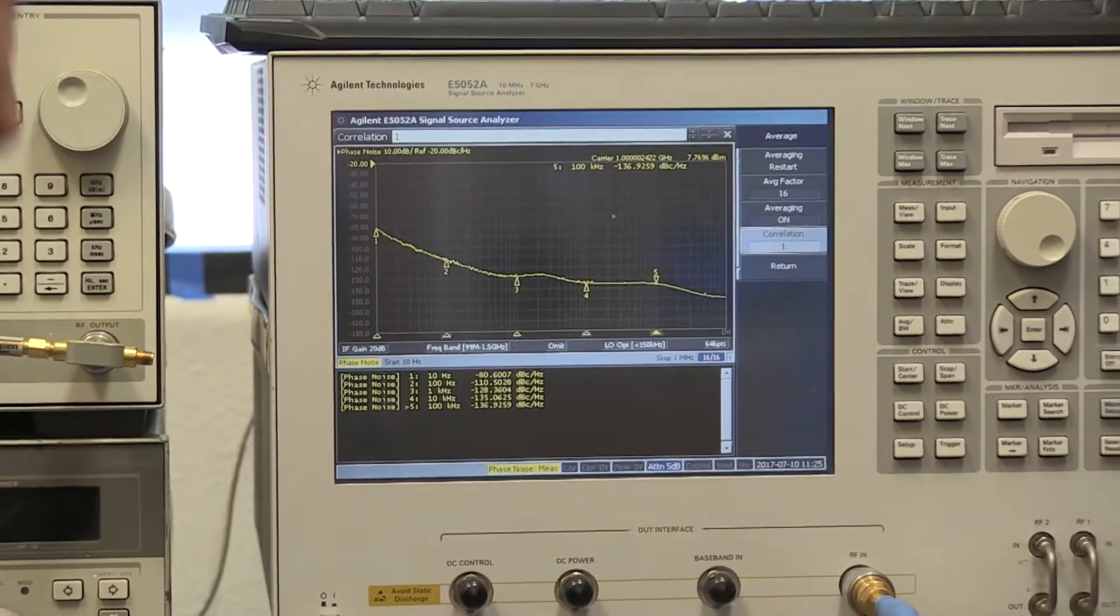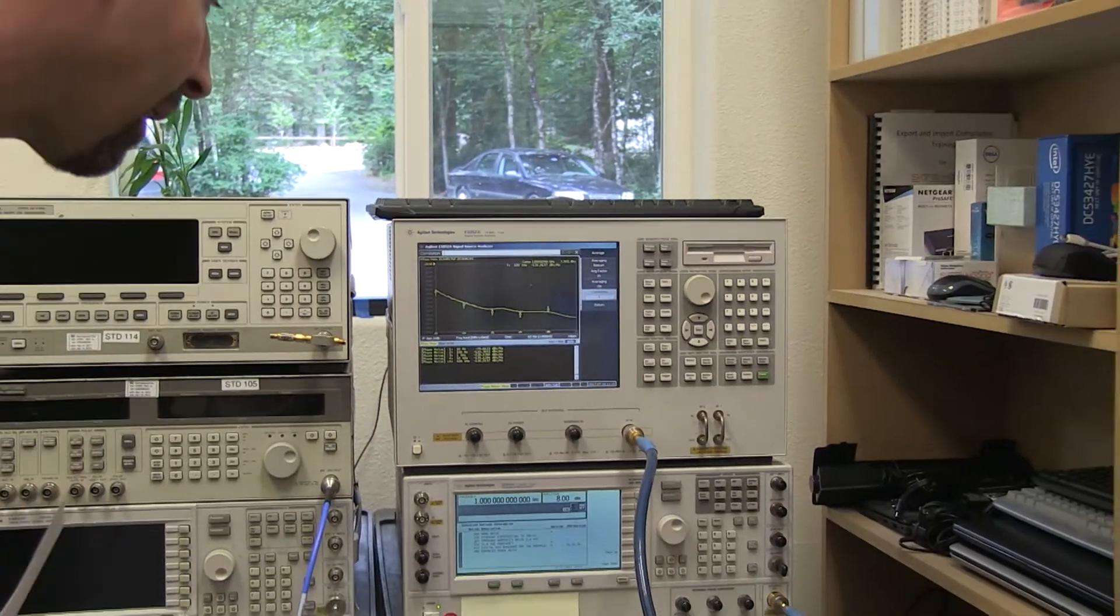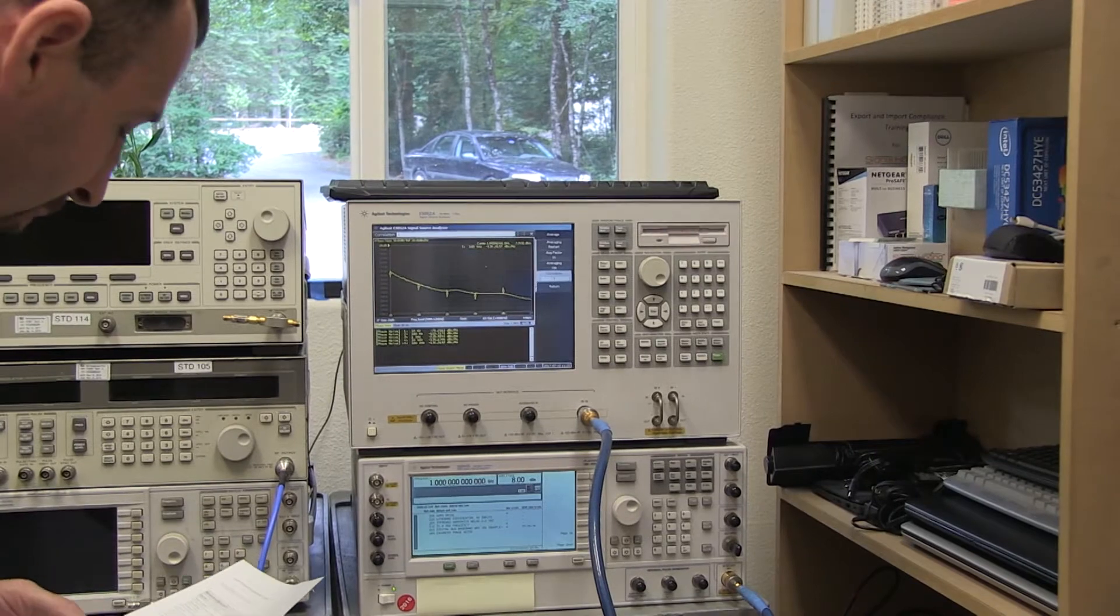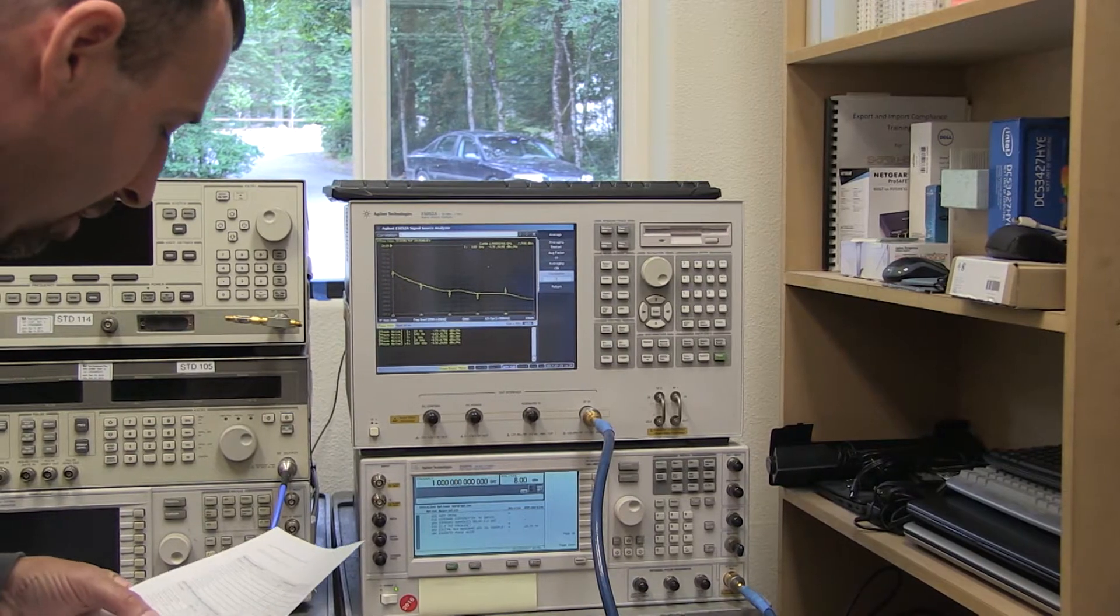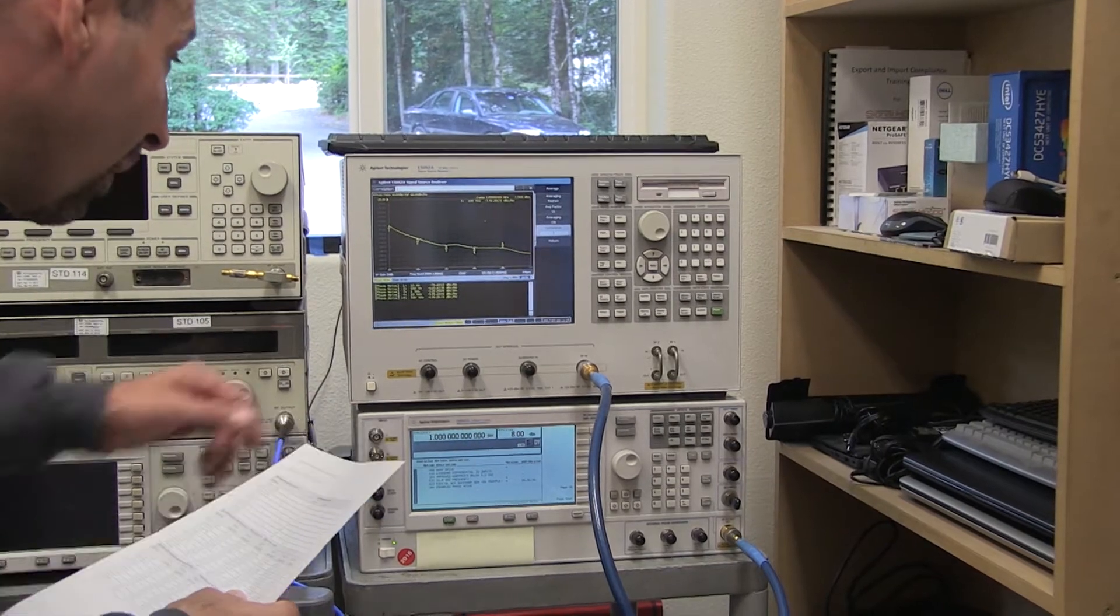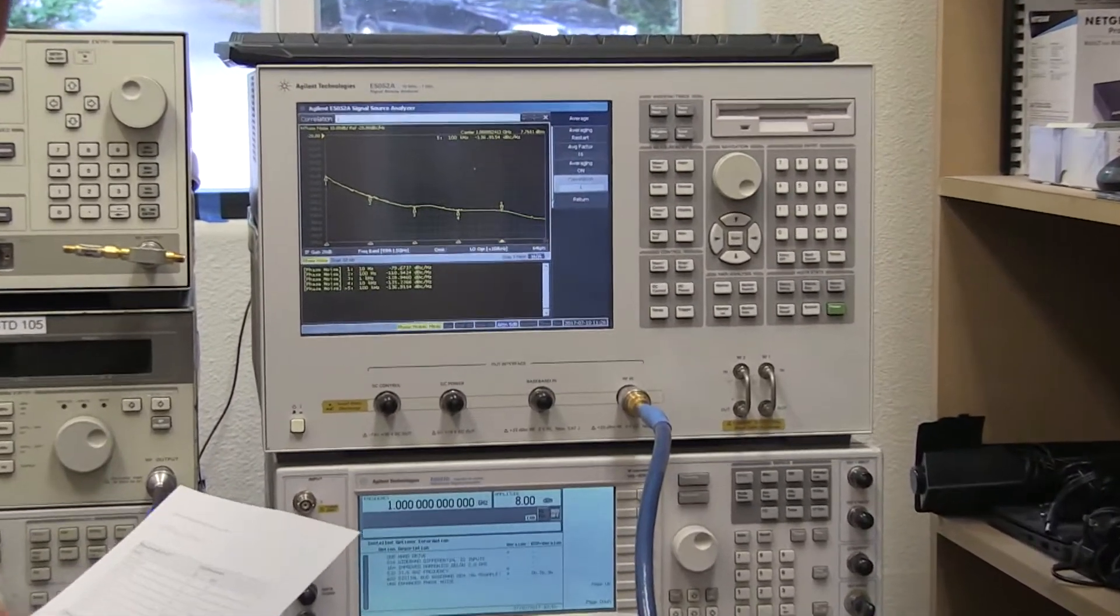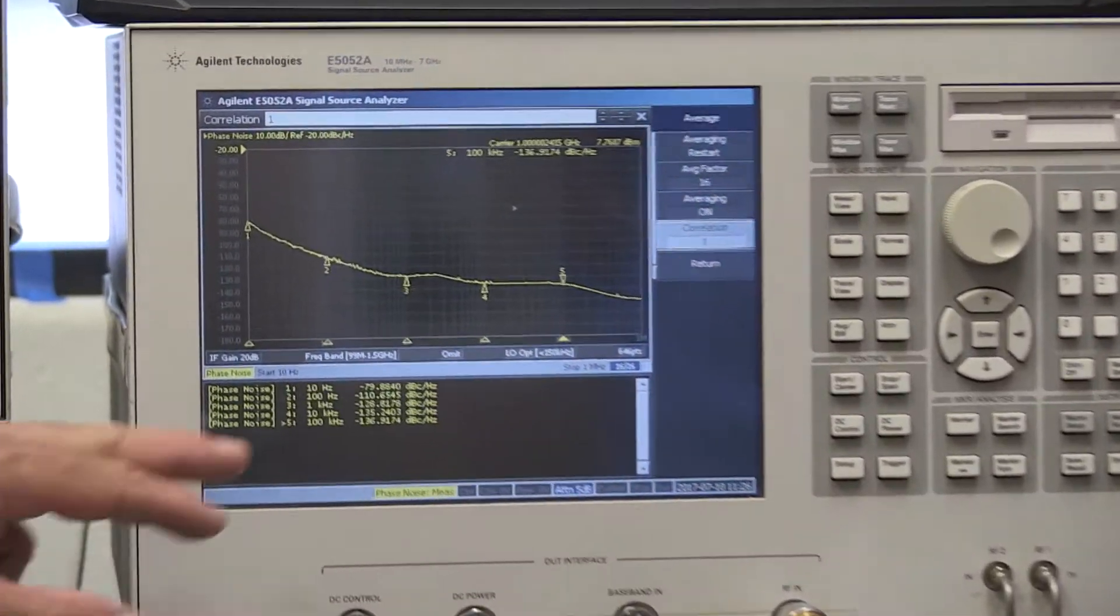Well within spec. We've looked at this E5052 and right now the unit is measuring within specification. At 10 Hz we have to be less than 79, we're meeting exactly 79. At 100 Hz we've got to be less than 96 and we're at 110.